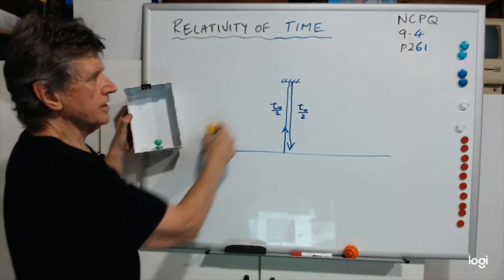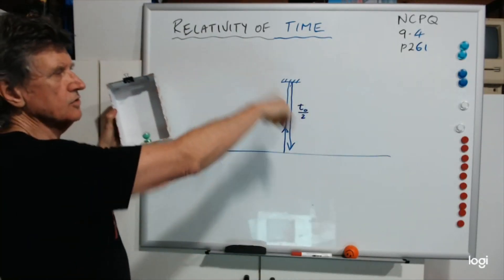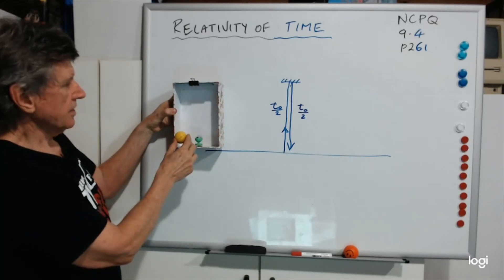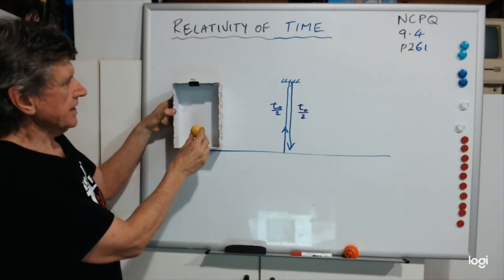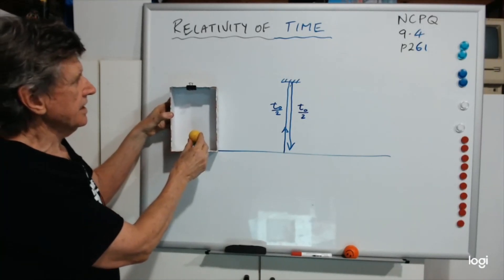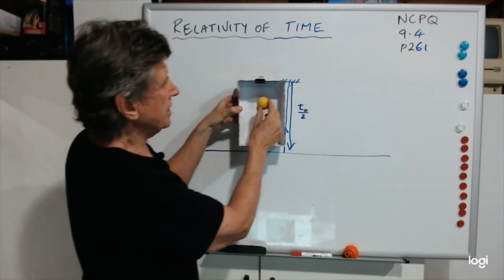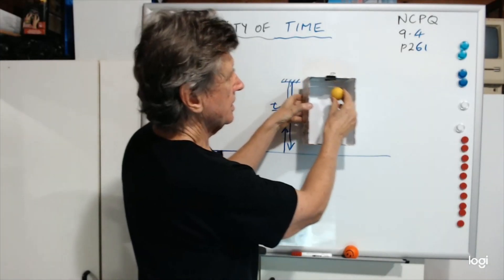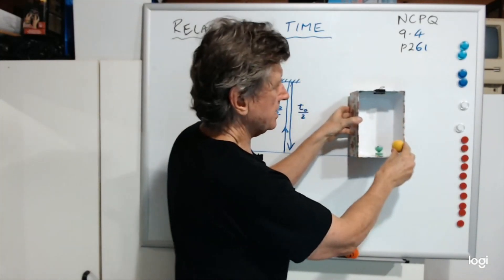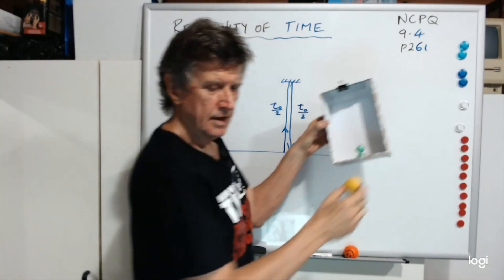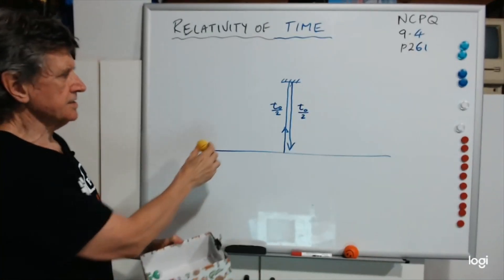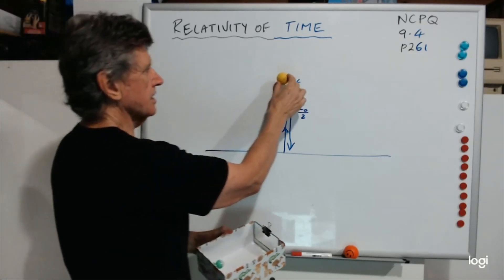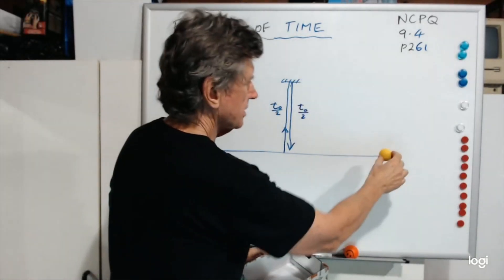Because light will bounce according to the laws of reflection. So it leaves there, as the train goes along it goes up to there, hits the mirror, and comes back down. So what you'd be seeing is a beam of light that went like that.